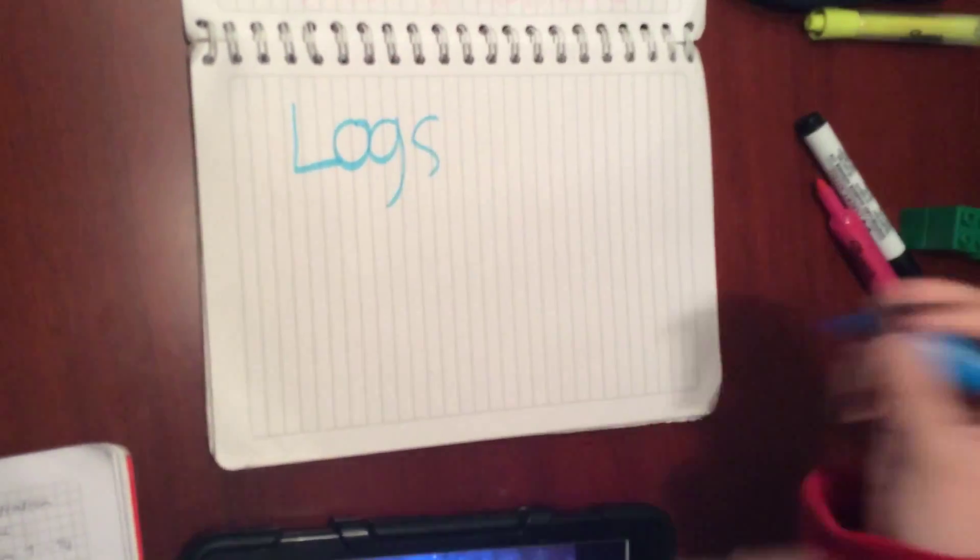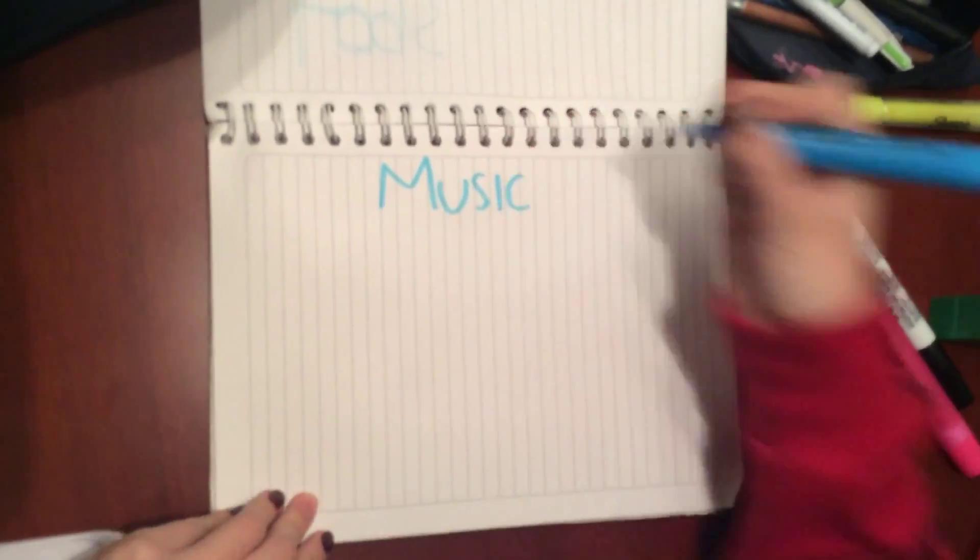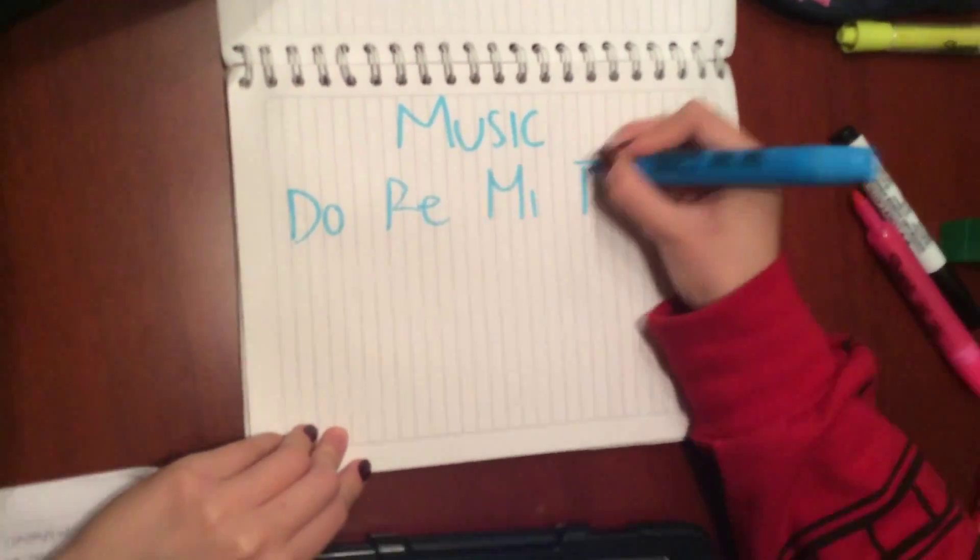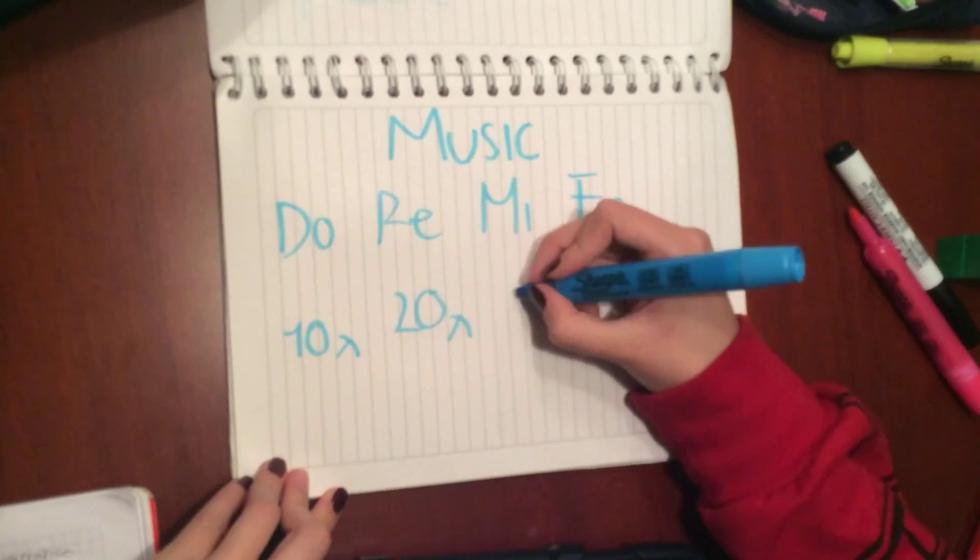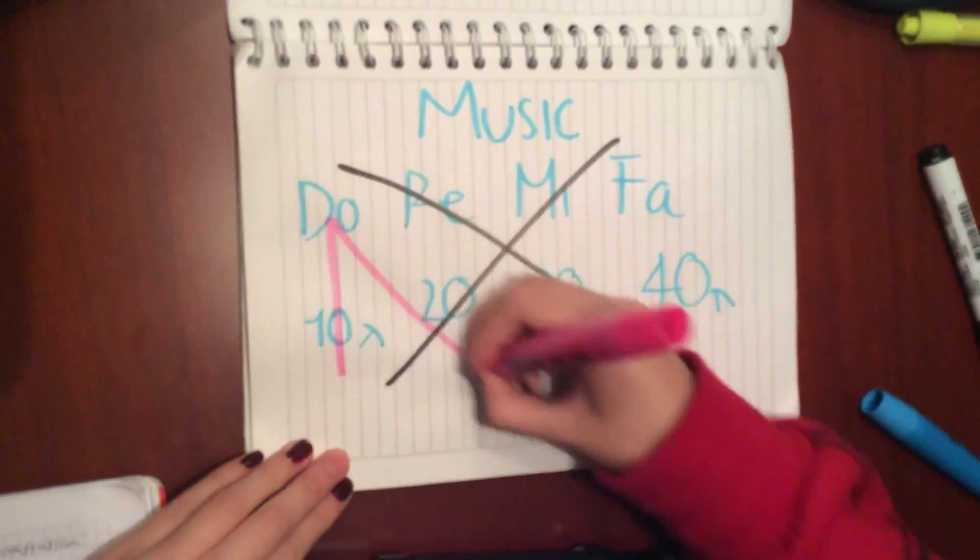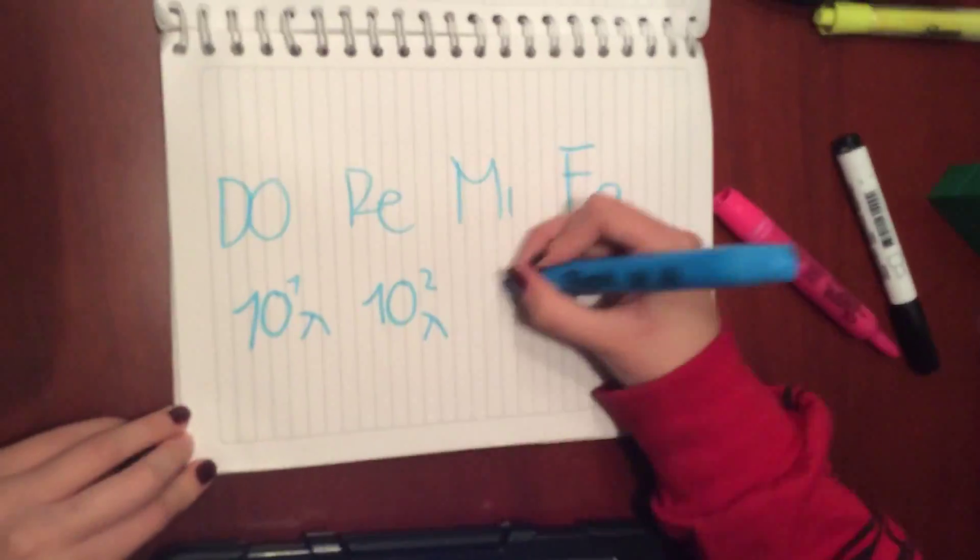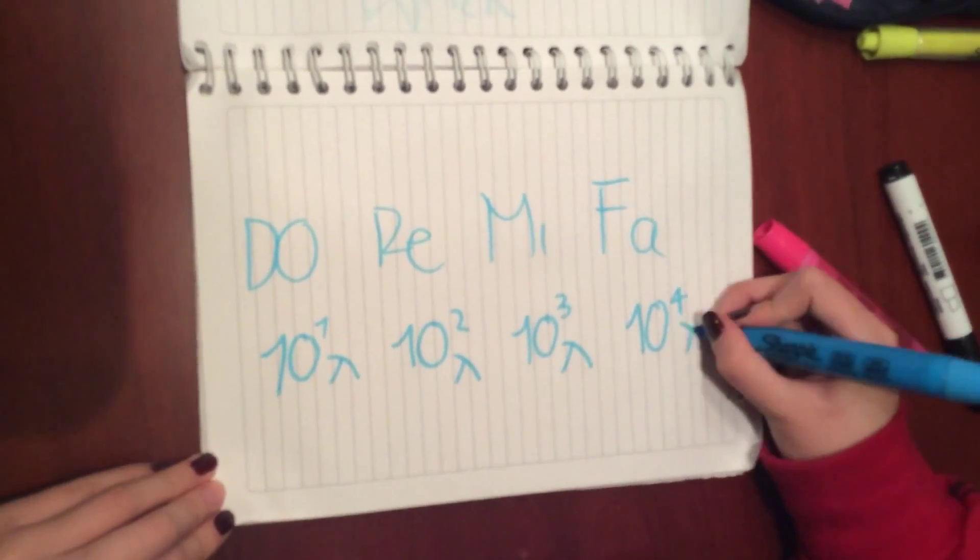Logs uses. The first use is music. We think that from DO to RE to MI to FA it increases by 10 for example, if it is 10 wavelengths to 20 wavelengths to 30 wavelengths to 40 wavelengths. But that is not true. Notes increase exponentially. Meaning that if DO is 10 to the 1 wavelengths, RE is going to be 10 to the 2 wavelengths and so on.